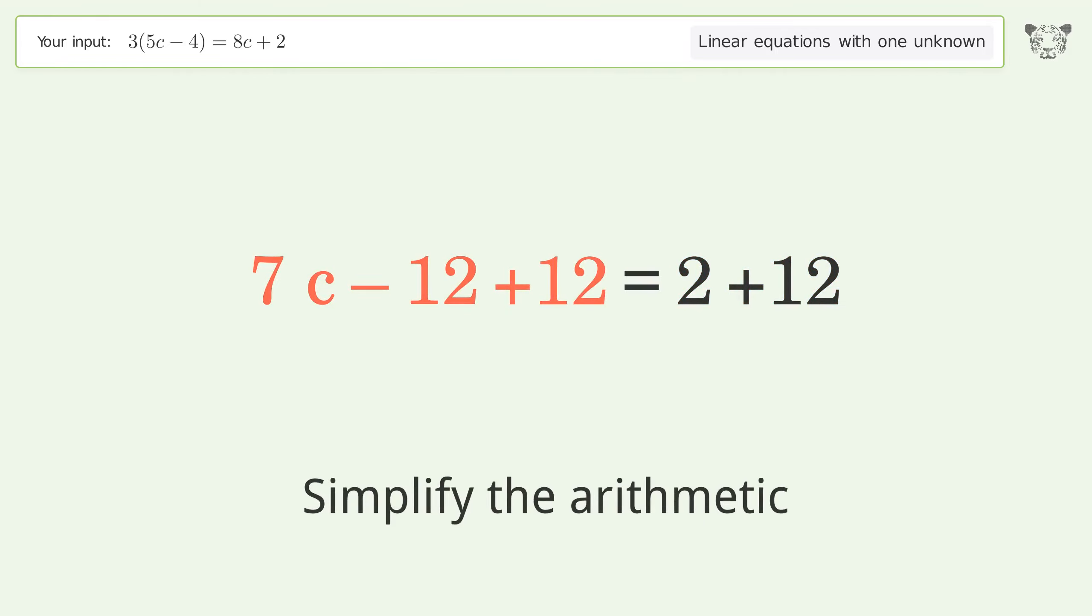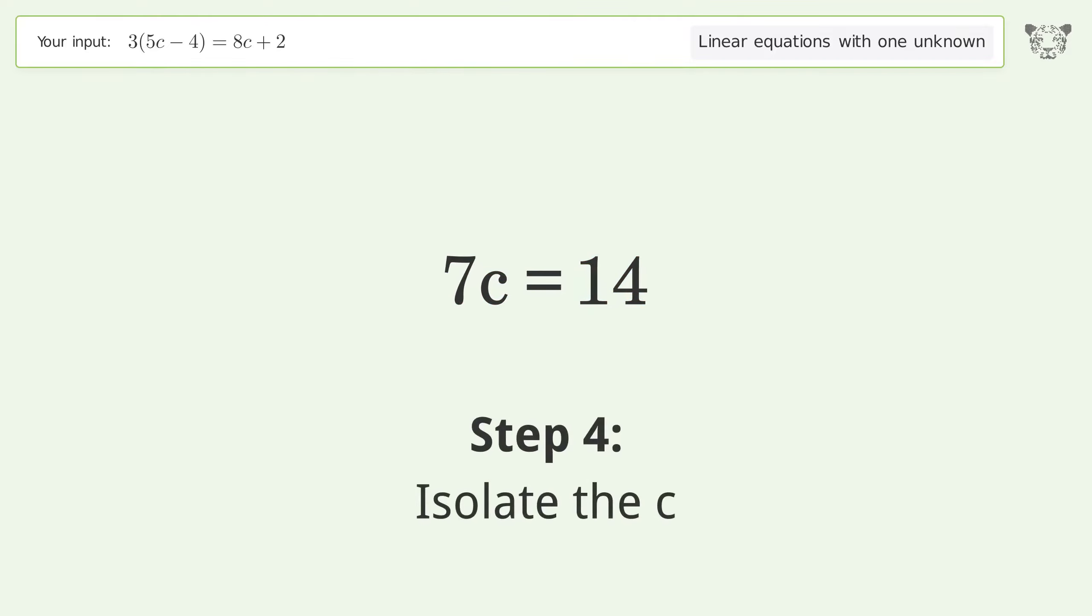Simplify the arithmetic. Isolate the c. Divide both sides by 7.